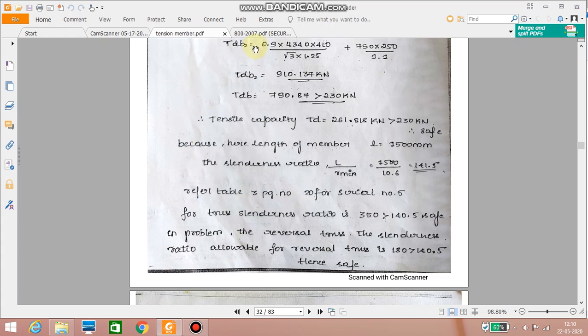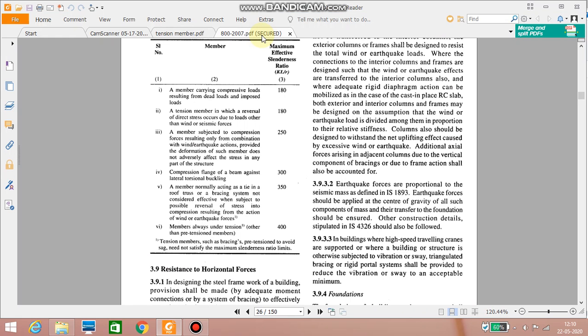So now table number 3 page number 20 I have taken. So here there are totally six categories. Out of that I have to go for the fifth category. It is a member normally acting as a tie in a roof truss.